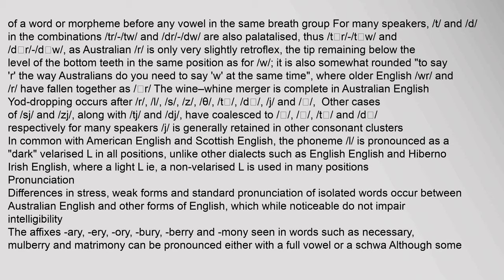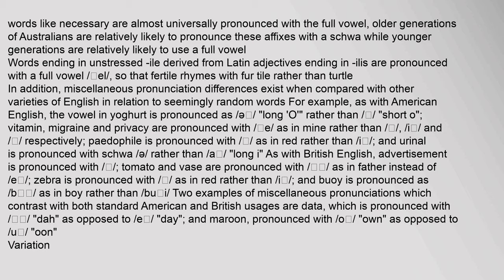Pronunciation differences in stress, weak forms and standard pronunciation of isolated words occur between Australian English and other forms of English, which while noticeable do not impair intelligibility. The affixes '-ary', '-ory', '-berry', and '-mony' seen in words such as 'necessary', 'mulberry' and 'matrimony' can be pronounced either with a full vowel or a schwa, although some words like 'necessary' are almost universally pronounced with the full vowel.